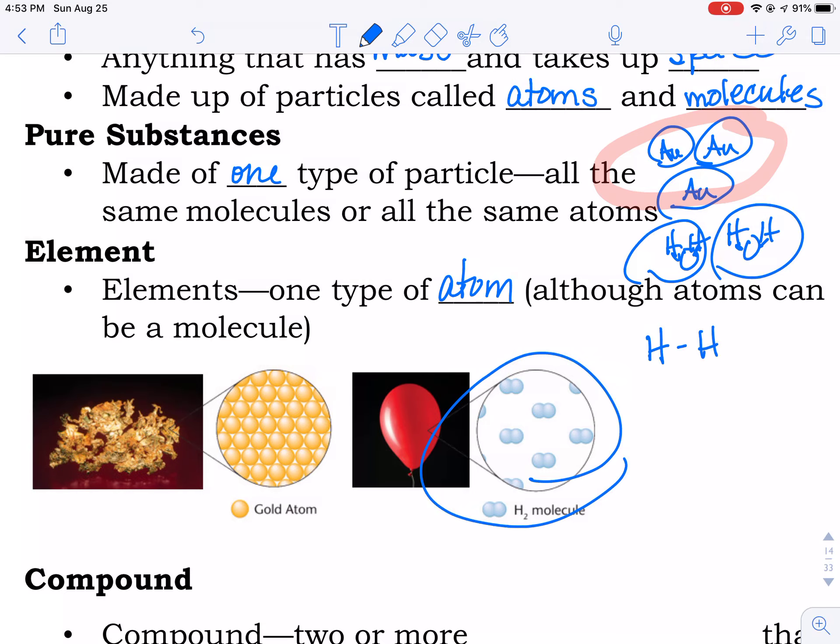Anybody remember what we call the elements that are made of two atoms? If you remember, they're diatomic. And I can't spell. Meaning two atoms. And they spell out the funny word, Hofbrinkel.